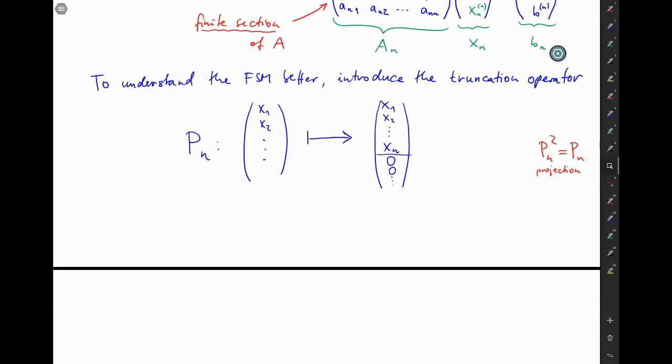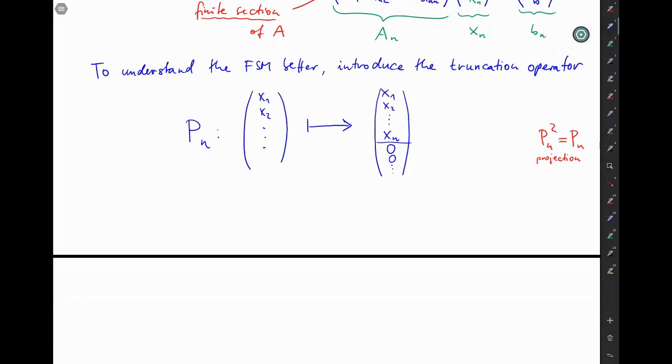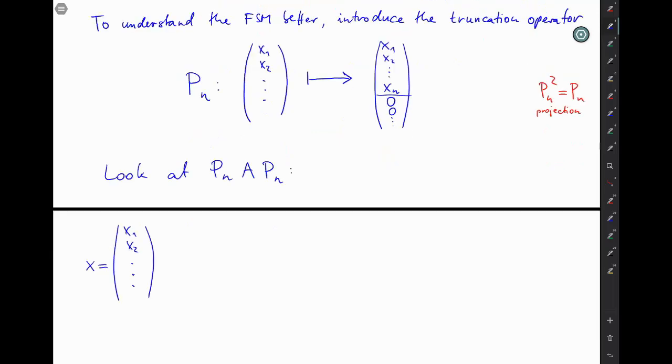And then let's use this truncation operator or projector to understand the finite section method better. And to do so, we will look at the composition Pn A Pn. So here you start with your infinite vector x and then first apply Pn.